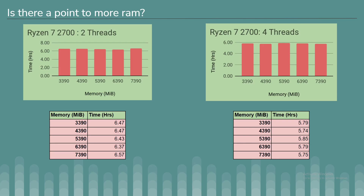Next we're going to talk about RAM. First I started testing the Ryzen on two threads, increasing RAM by 1000 MB at a time, but I really don't see a whole lot of impact — a lot of the times are just within margin of error. The Chia website did say that at four threads you might see a little more impact, so I tested four threads again and really didn't see any results there either. Same thing — within margin of error.